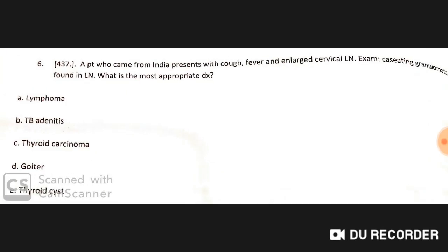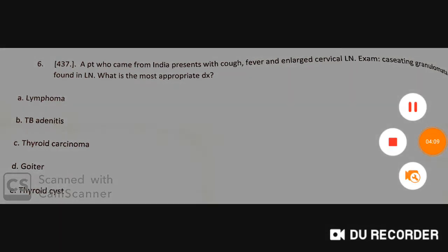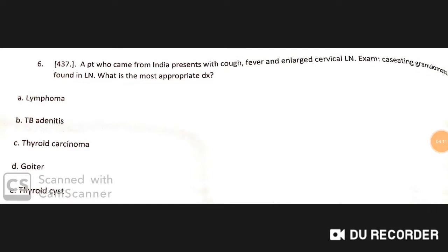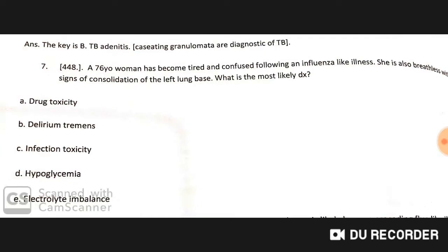A patient who came from India to the UK presents with cough, fever, and enlarged cervical lymph nodes. Examination of the lymph node reveals caseating granulomas. The most appropriate diagnosis is TB adenitis, as caseating granulomas are diagnostic of tuberculosis.